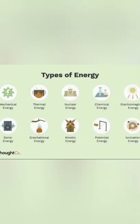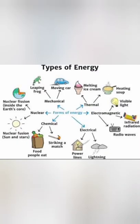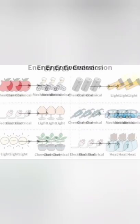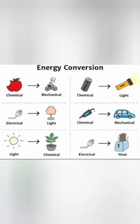Other forms of potential energy include elastic, electrical, chemical, and magnetic. Like all forms of energy, they can be exchanged from one form to another. In fact, all physical processes can ultimately be defined as a transfer of energy.